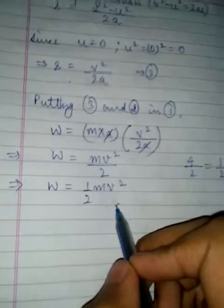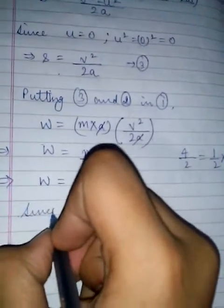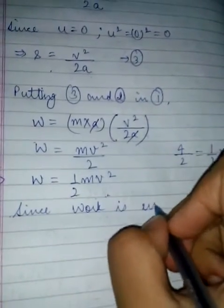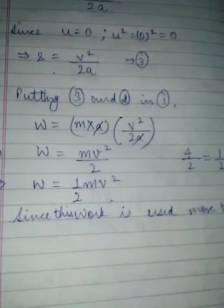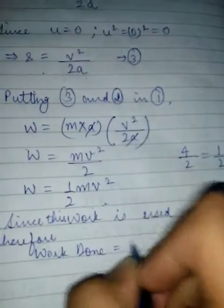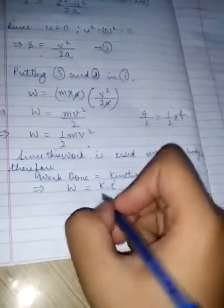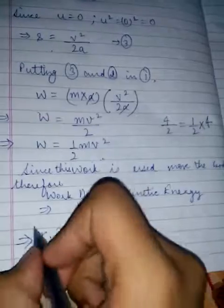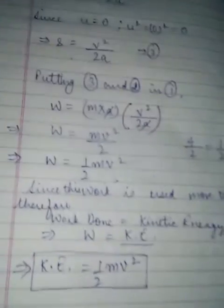Since this work is used to move the body, therefore work done is equal to kinetic energy. That implies W = K.E., which means kinetic energy is equal to ½MV². This is the formula for the kinetic energy that we would be using for our numericals. Thank you, please like and subscribe my channel.